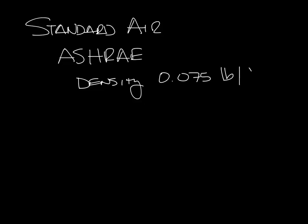So standard air is defined by ASHRAE as having a density of 0.075 pounds per cubic foot, a barometric pressure of 29.92 inches of mercury at sea level, and 70 degree dry bulb temperature.